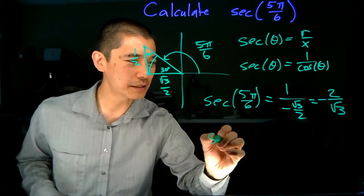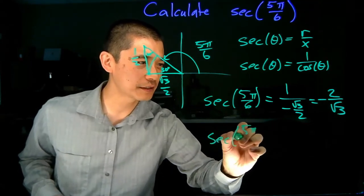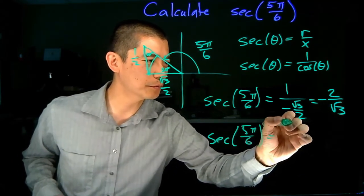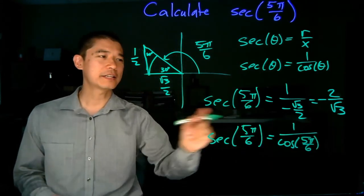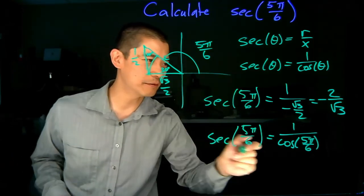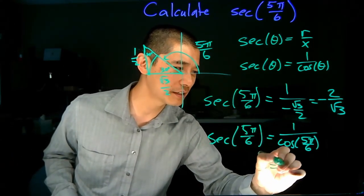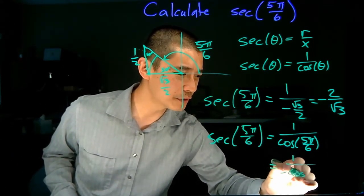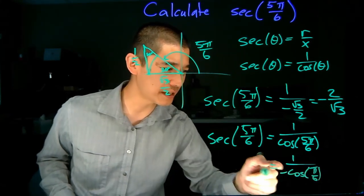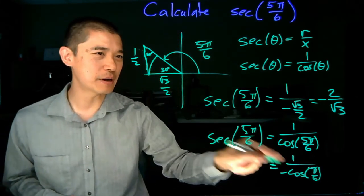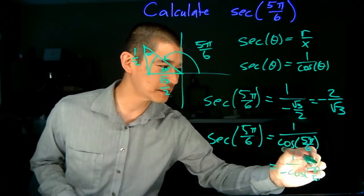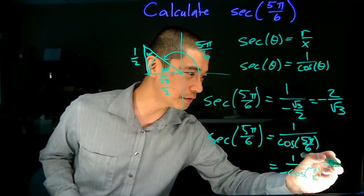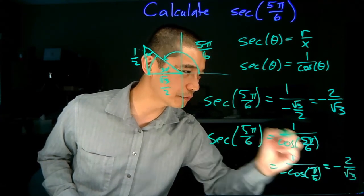Or, we can do secant of 5 pi over 6 is equal to 1 over cosine of 5 pi over 6. To calculate cosine of 5 pi over 6, we use the reference angle and adjust the sign, so that's a negative cosine of pi over 6, so it's in the negative direction, and that is our reference angle pi over 6. And that leads us to the same result, negative 2 over the square root of 3.